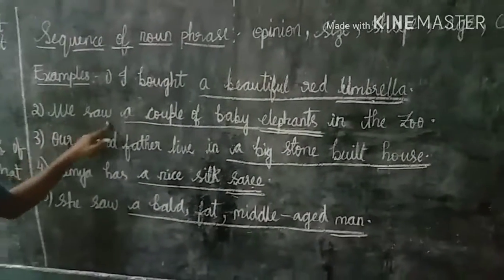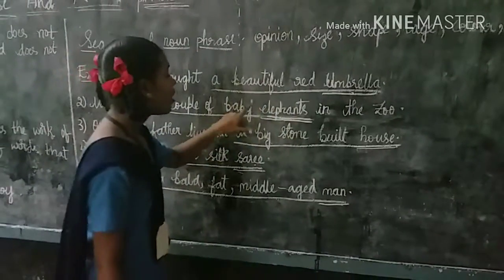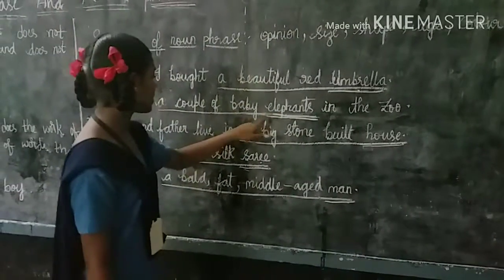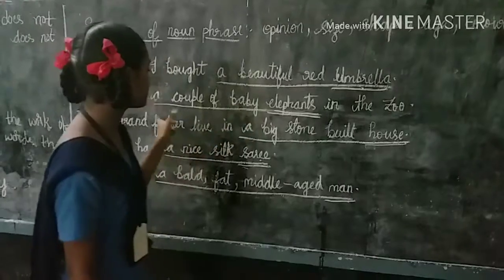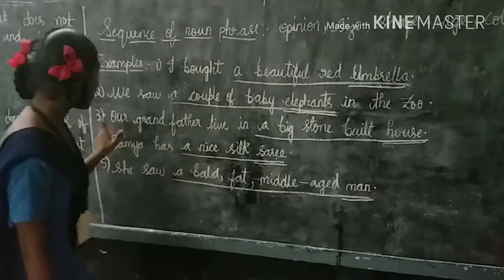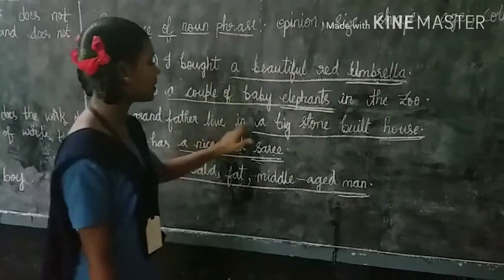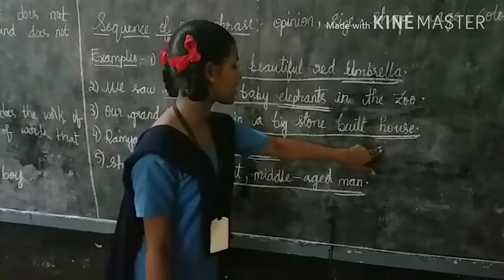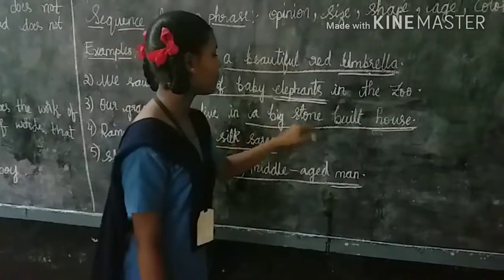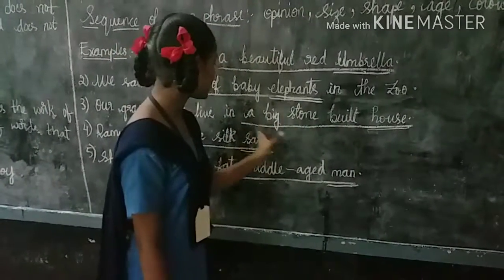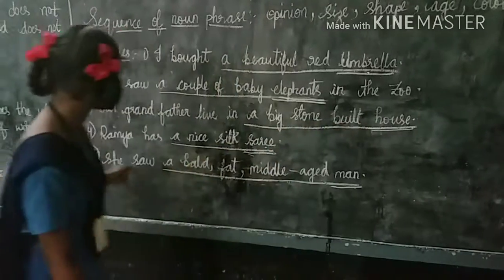We saw a couple of baby elephants in the zoo. Elephants is a noun. A couple of baby elephants is a noun phrase. Our grandfather lived in a big stone-built house. House is a noun. A big stone-built is a phrase. So, a big stone-built house is a noun phrase.